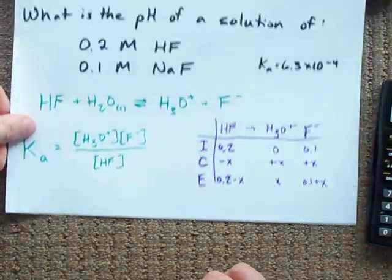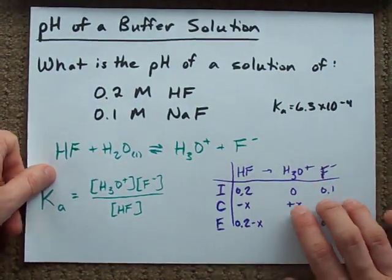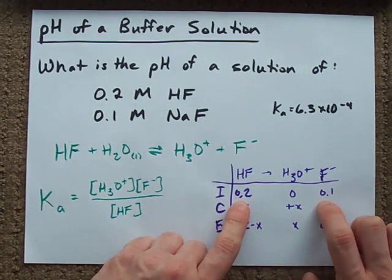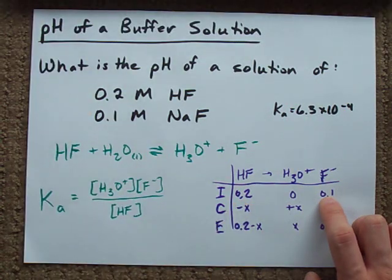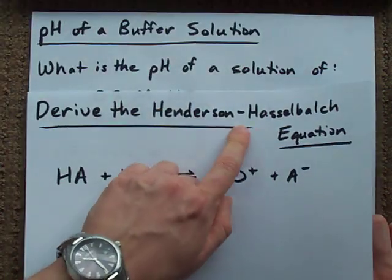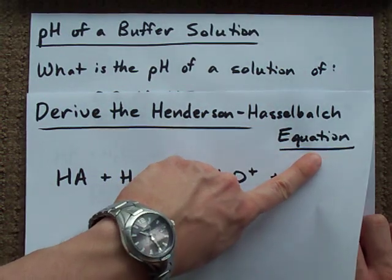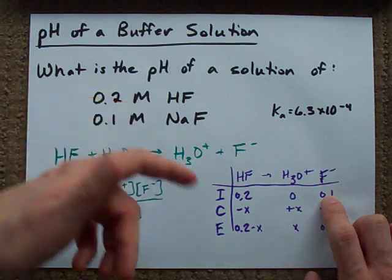The key to figuring out the pH of a buffer solution is to use an ICE table with an initial concentration that is not zero. Now, there's actually an easier way to do buffer calculations - it's called the Henderson-Hasselbalch equation. I'll show you how to use that in a different video, but for now, this is the old school way.